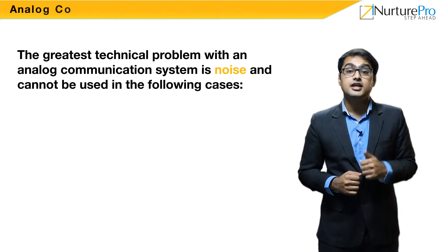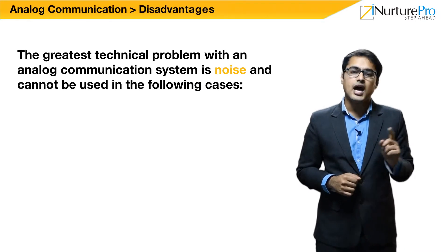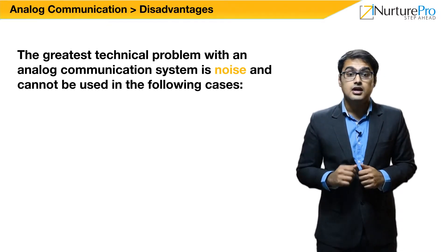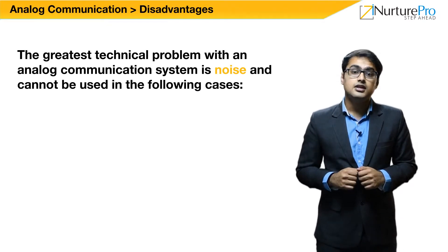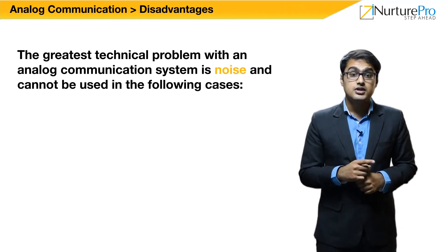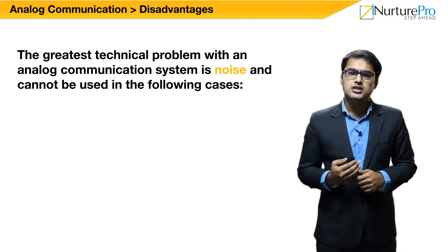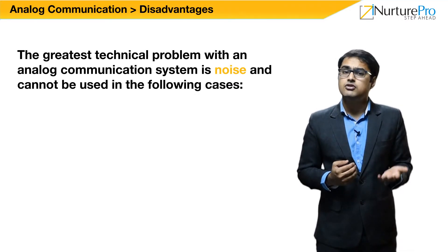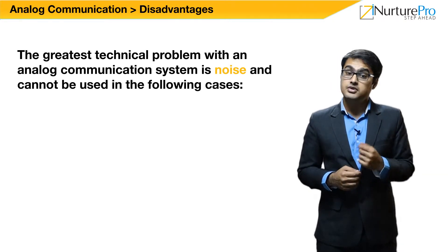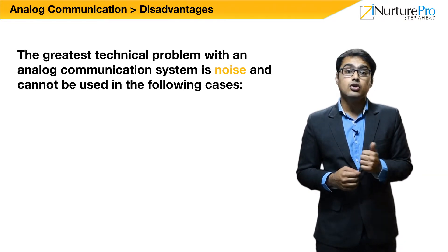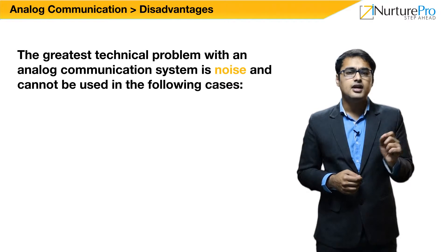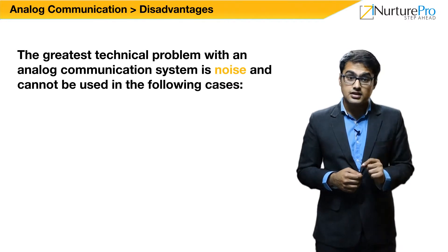The greatest technical problem with analog communication systems is noise. Noise that comes from any part of the system — the modulator, the transmitter, the communication link, the receiver, or the demodulator — can corrupt the signal, and analog systems do not offer opportunities to identify the corrupted signal.